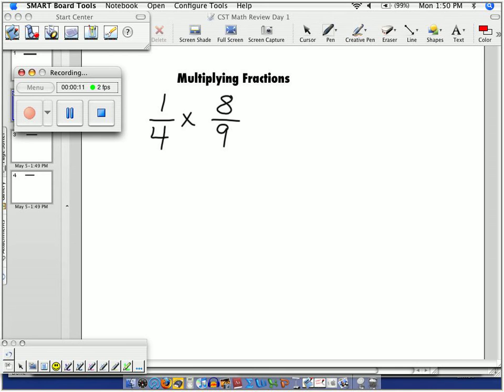When you multiply fractions, all you're doing is you're evaluating the top times top, so 1 times 8 makes 8. And then on the bottom, 4 times 9 makes 36.